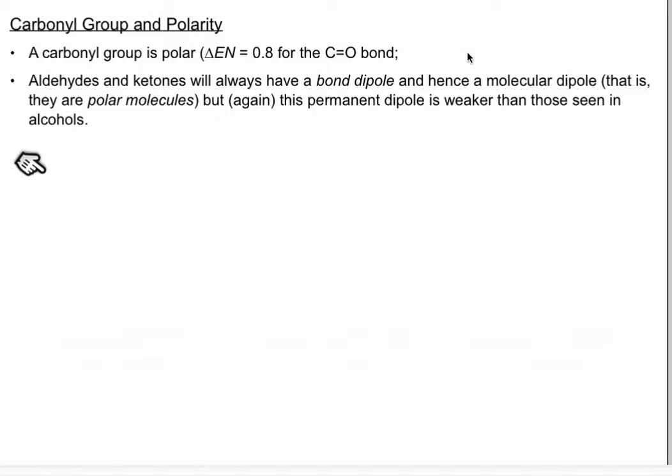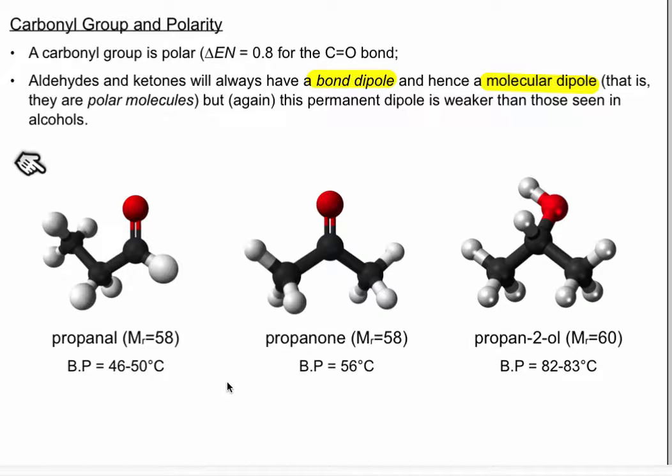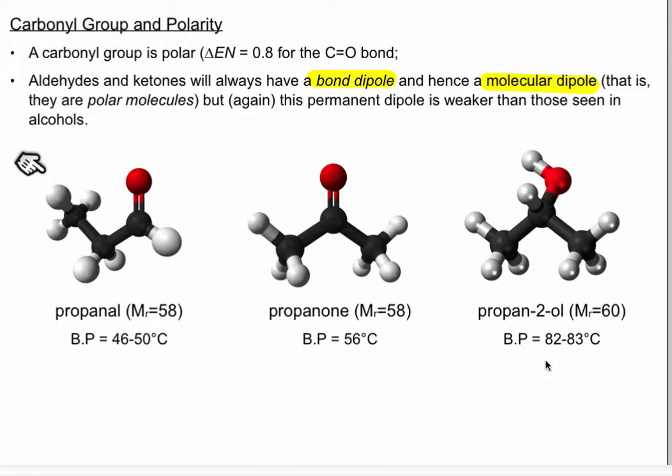Finally, carbonyl group and polarity. So a carbonyl group is polar, not surprising. The C double bond O is a polar bond. Delta EN is about 0.8. And so aldehydes and ketones will have a bond dipole and hence a molecular dipole. So they're polar molecules. Aldehydes and ketones will have a higher boiling point than the same molecular mass or roughly the same molecular mass alkanes because they're polar. So that polarity is going to make the force of attraction between molecules stronger. That said, the boiling point is going to be lower than an alcohol.